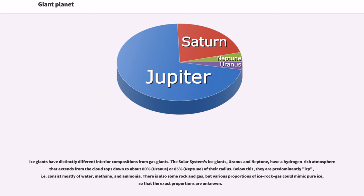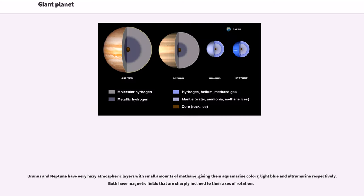There is also some rock and gas, but various proportions of ice-rock-gas could mimic pure ice, so that the exact proportions are unknown. Uranus and Neptune have very hazy atmospheric layers with small amounts of methane, giving them aquamarine colors, light blue and ultramarine respectively. Both have magnetic fields that are sharply inclined to their axes of rotation.